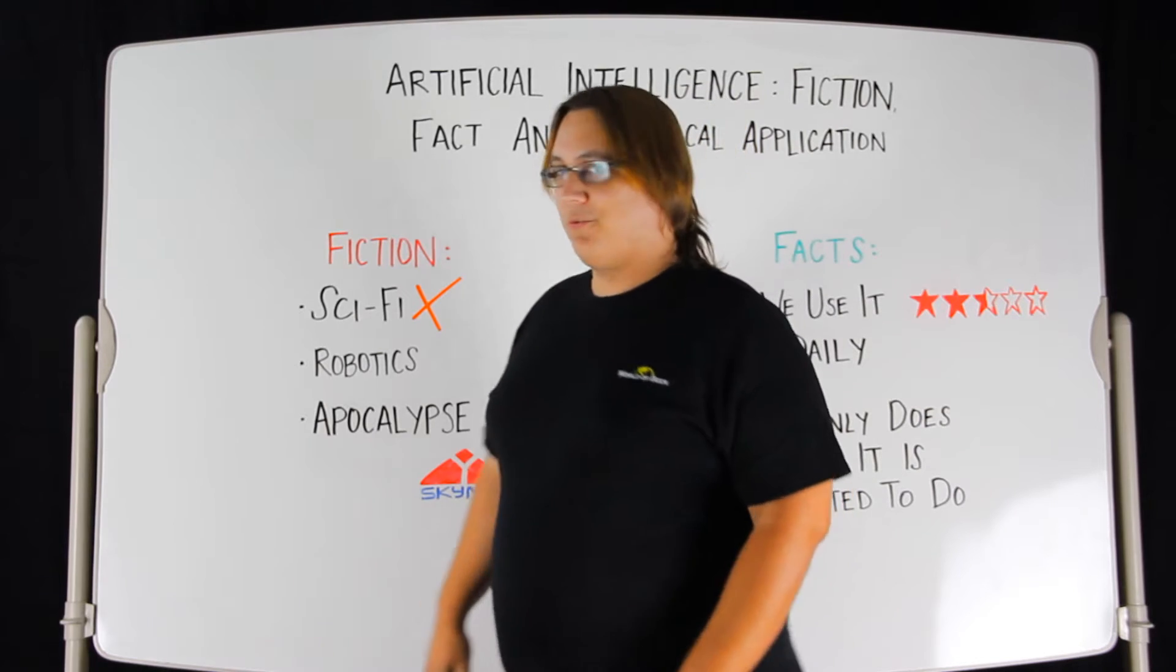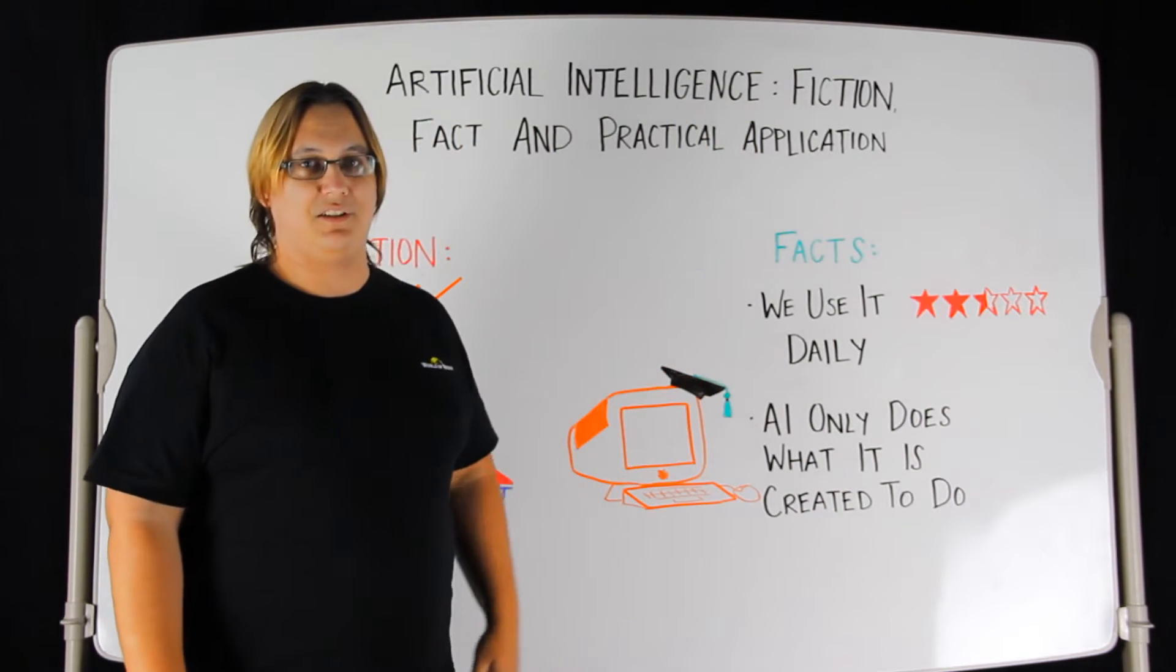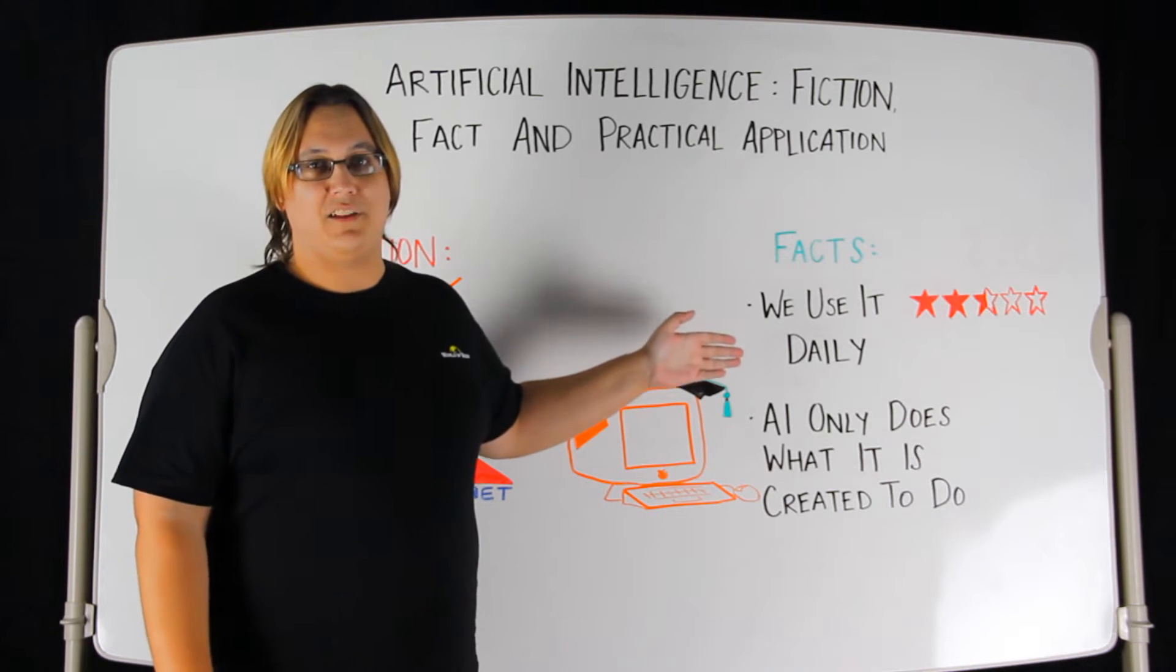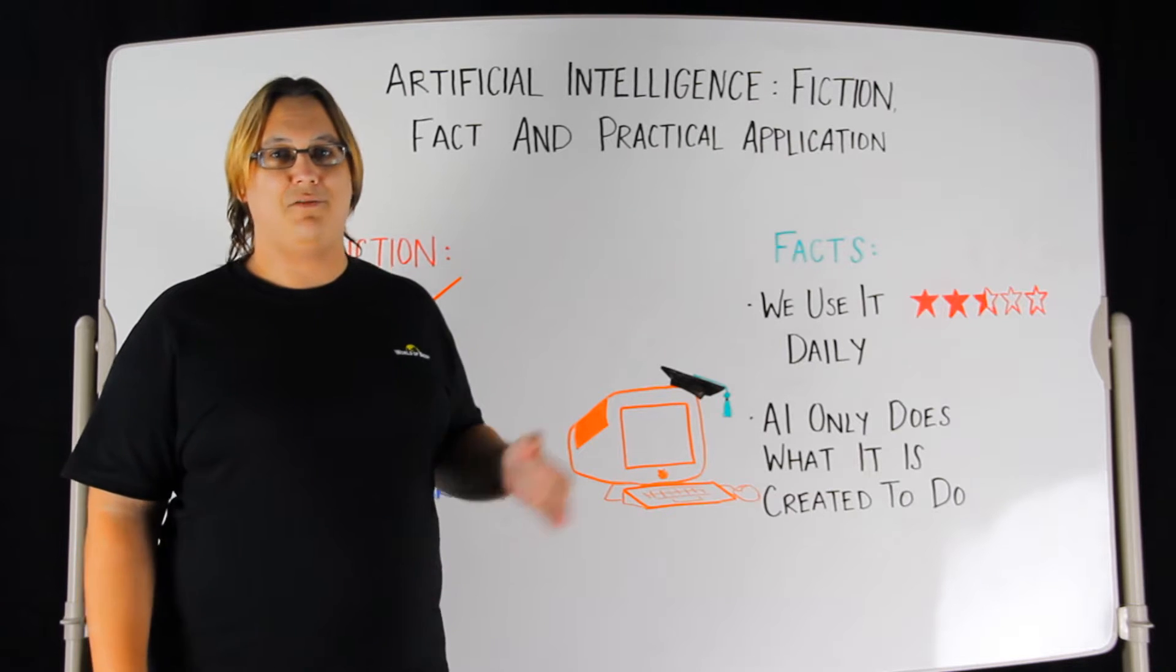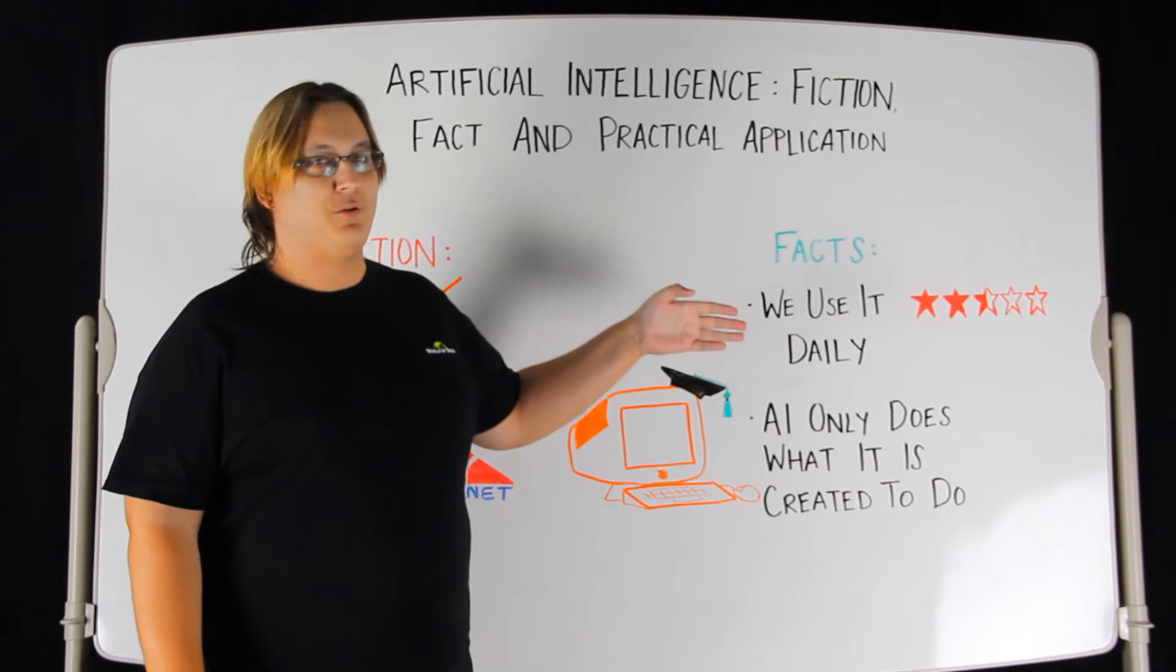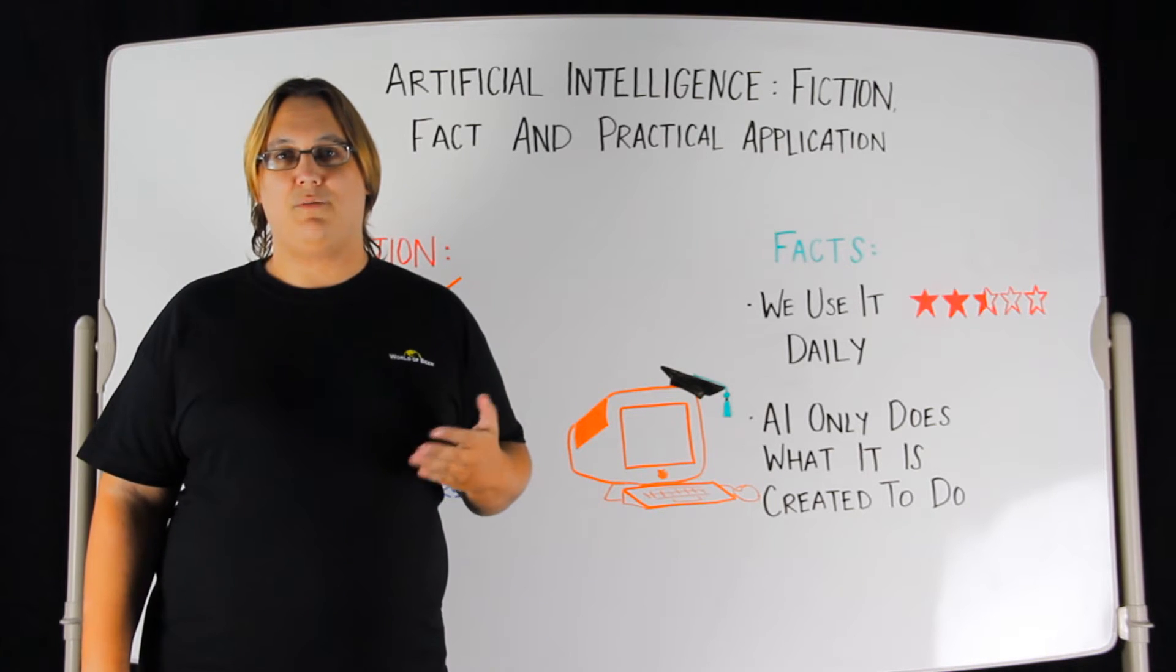So what we're really gonna talk about here is some of the actual factual sides of artificial intelligence. First off, you use it in your everyday life. If you've got a Netflix subscription, you're interacting with artificial intelligence every time they recommend a movie and you throw your stars in there. It's learning how to better give you recommendations, and that's artificial intelligence in a nutshell.